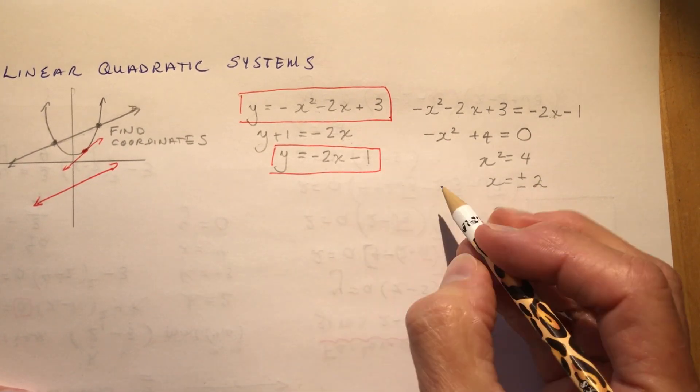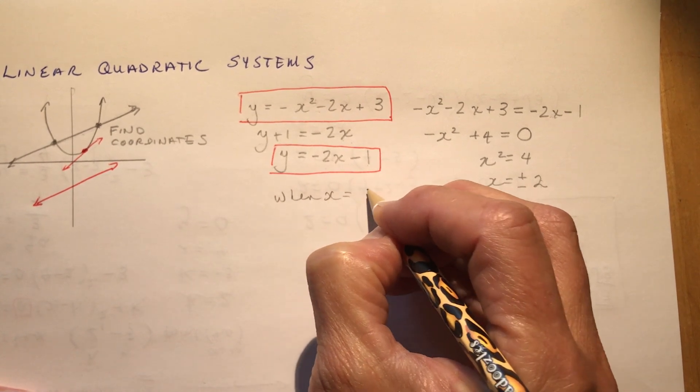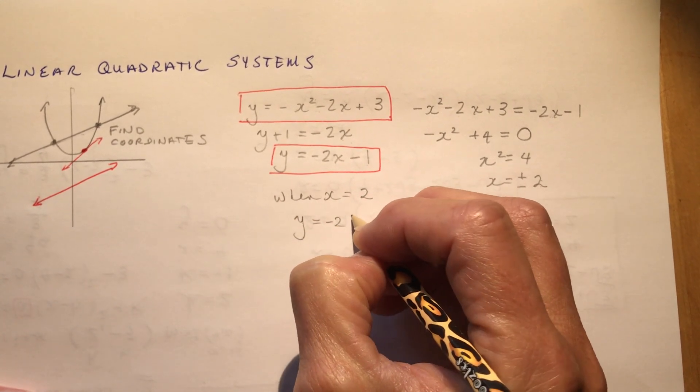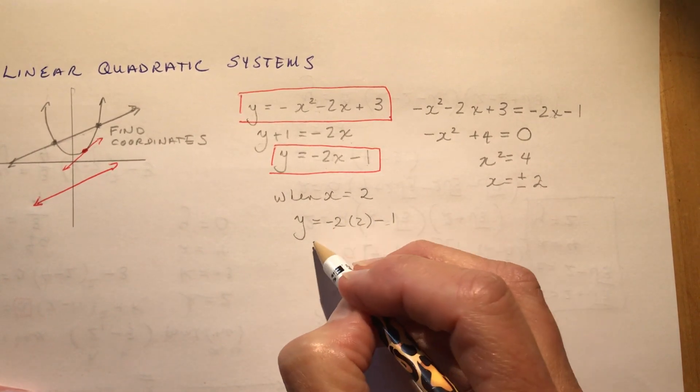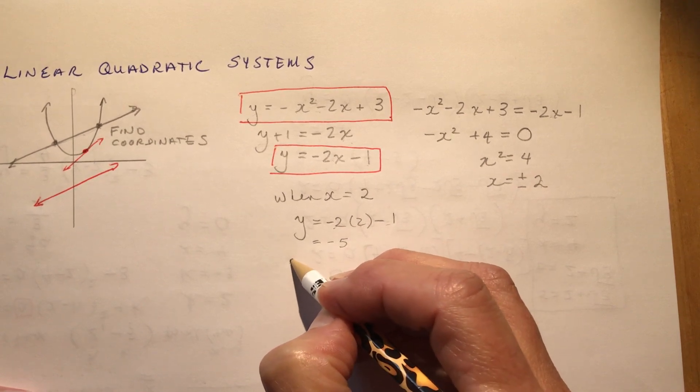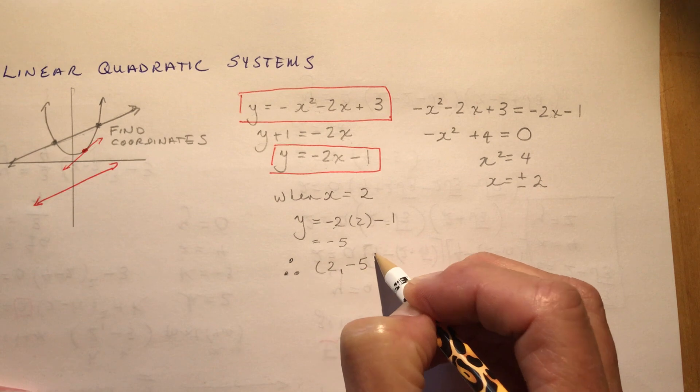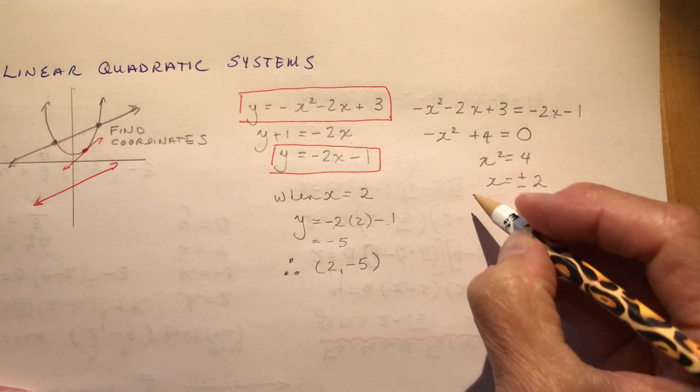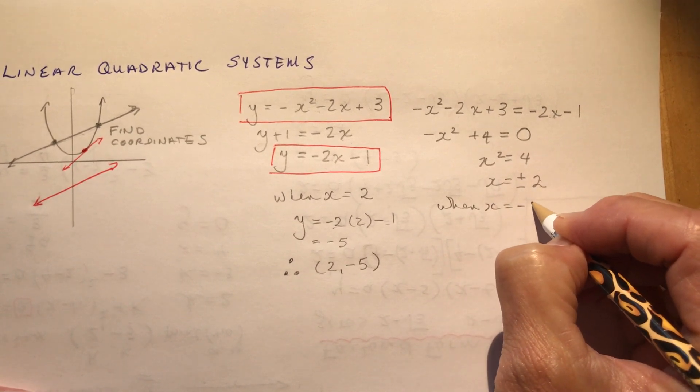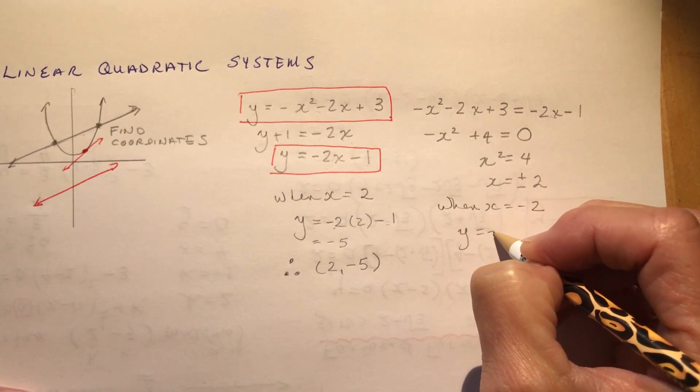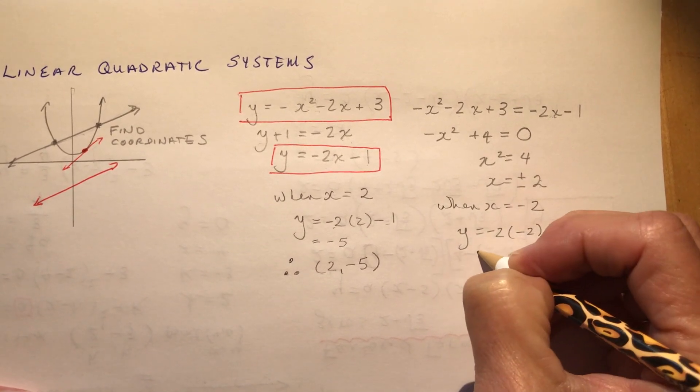So if I plugged in 2 here, I would have, so I'm going to say when x is equal to 2, y is equal to minus 2 times 2 minus 1. So that's minus 4 minus 1 is minus 5. So that means 2 and minus 5 is one of the points of intersection.